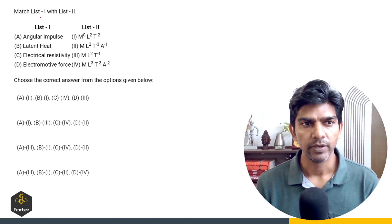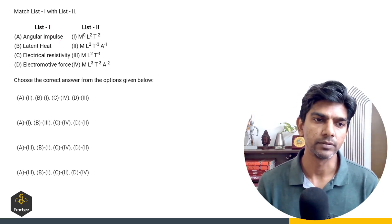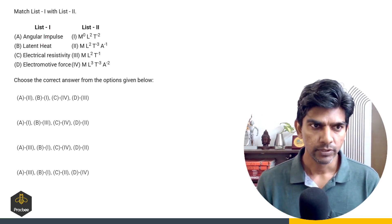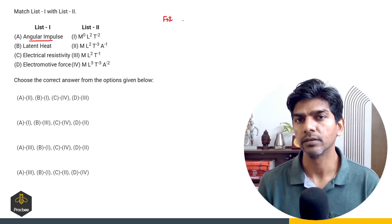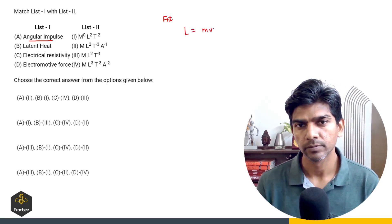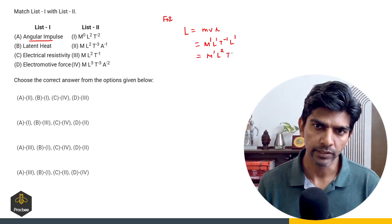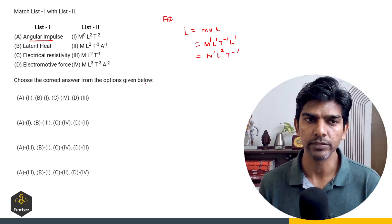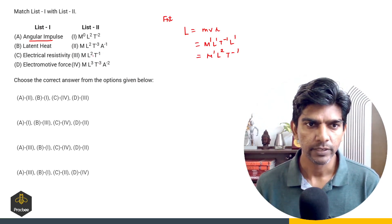Now let's see the next match the column question. We have physical quantities in list one and their corresponding dimensions in list two. Using the elimination technique, let us first find the dimension of angular impulse. Angular impulse equals change in angular momentum, which is M·v·r. So M raised to power 1, L raised to power 1, T raised to power minus 1, times L raised to power 1, giving M raised to power 1, L raised to power 2, T raised to power minus 1. This corresponds to 3. So options A and B are incorrect, leaving only options C and D.